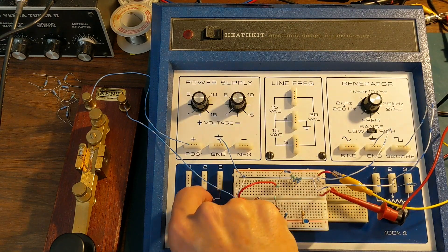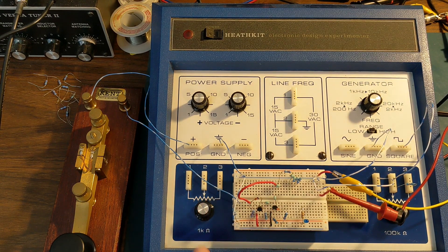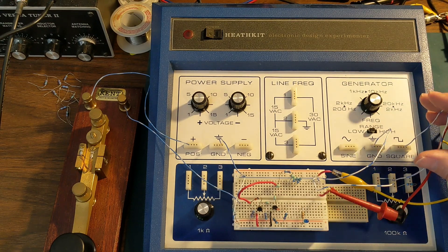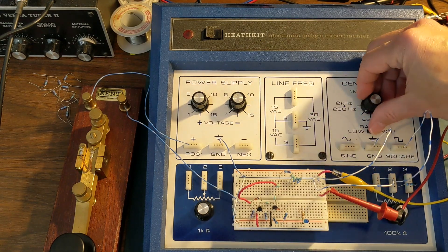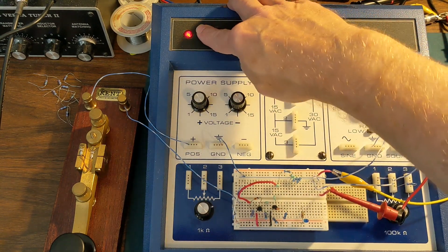It has a couple variable pots, a 1k pot and a 100k pot. So I've got it hooked up to the square wave right now in the low range, so at 200 hertz.